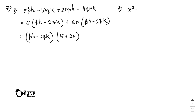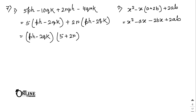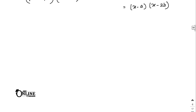Sum 7.2: x² - x(a + 2b) + 2ab. Expand to get x² - ax - 2bx + 2ab. Common x gives x(x - a). Common 2b gives 2b... minus 2b gives minus 2b(x - a). So the answer is (x - a)(x - 2b).